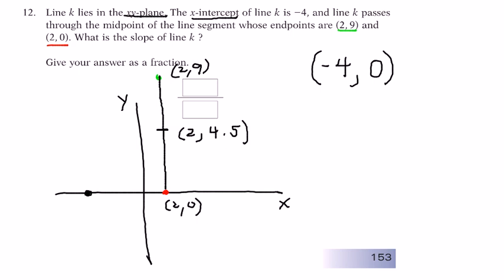Now, they tell us that the line passes through this midpoint right here. And, they tell us the X intercept of the line is negative 4. Which means, there you go. There's our line.